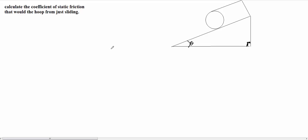We want to calculate the coefficient of static friction that would keep the hoop from sliding ever so slightly right here on the incline plane, whose angle is theta.